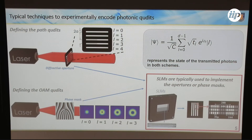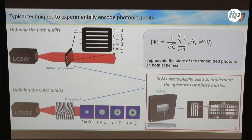The idea of encoding qudits relies on the transmission of single photons through different apertures. For path qudits, you define different propagation paths available for photon transmission. For orbital angular momentum, you have holograms which generate different types of Laguerre-Gaussian modes. This generation scheme is really efficient because you can simulate these apertures using spatial light modulators, which have very good reflectivity. So you don't have a lot of losses, and they allow very good control of the coefficients of the state being generated. But the problem is the detection scheme.